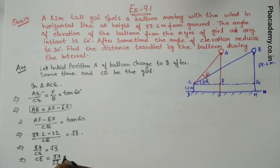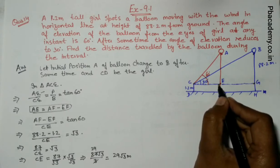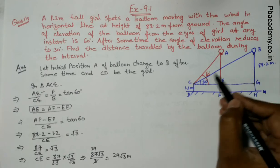Rationalizing this by multiplying root 3 on numerator and denominator, it becomes 87 root 3 upon 3. This cancels to 29, so the value of CE is 29 root 3 meters.